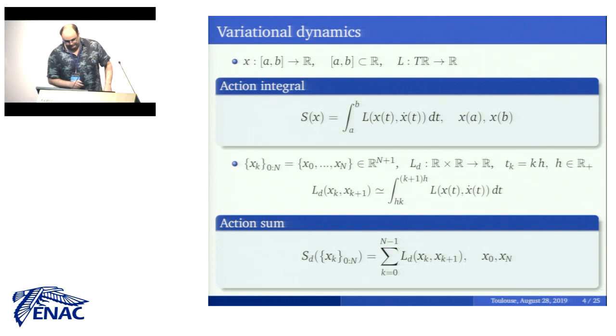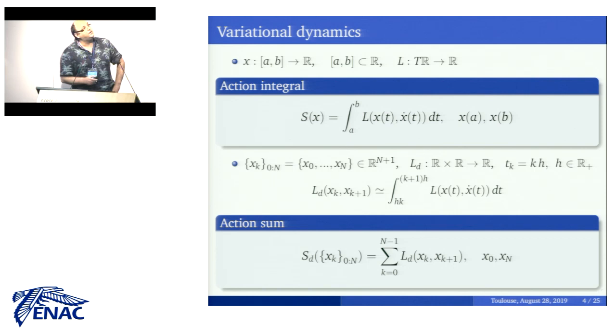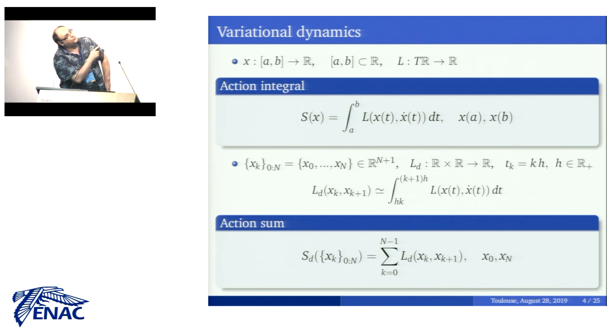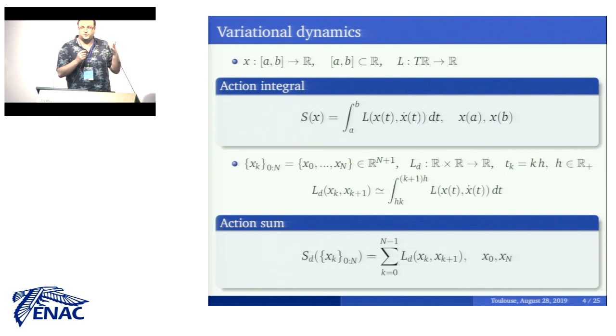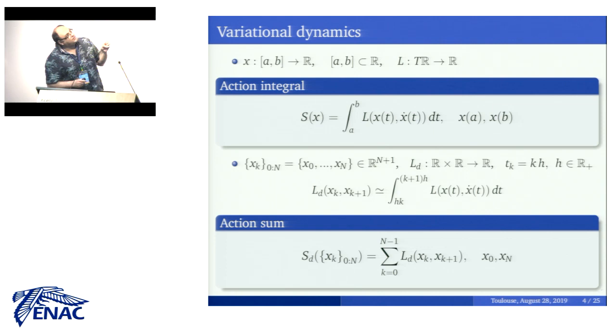So, Lagrangian systems — how do we define a Lagrangian system? We have normally a Lagrangian function which we define over the tangent bundle of a configuration manifold. Here I'm sticking to real space because afterwards we will consider fractional derivatives of the configuration curves, and those are only well defined on real space and not on a general manifold. But of course this is completely general for any smooth manifold. Once we have our Lagrangian function, we can state the action integral as shown there, and that's for the continuous side.